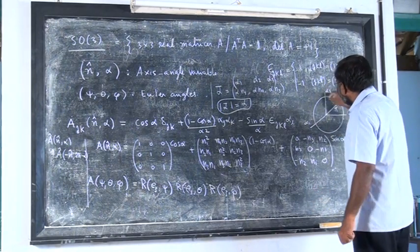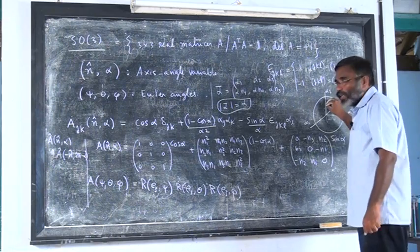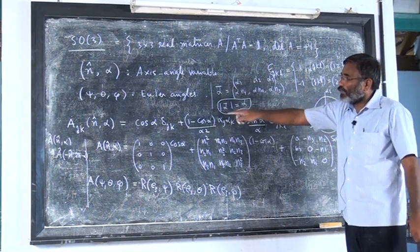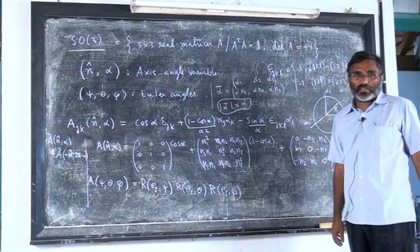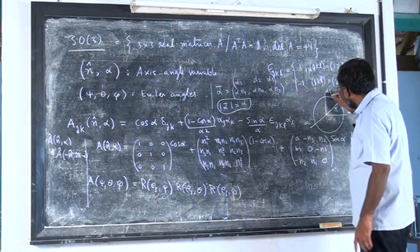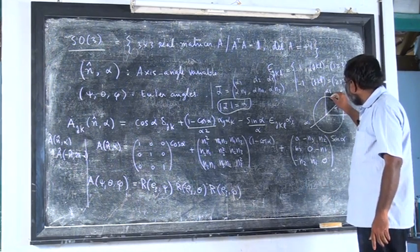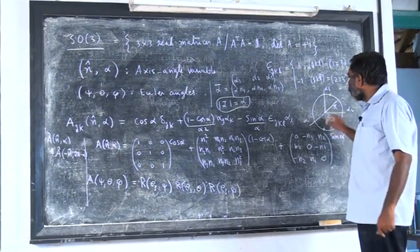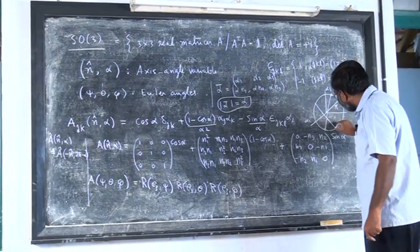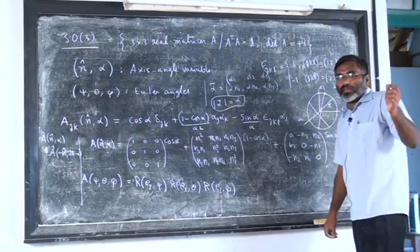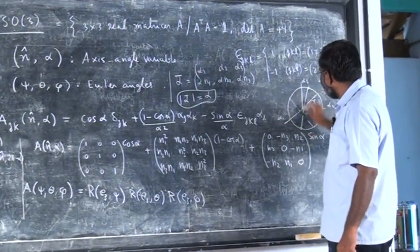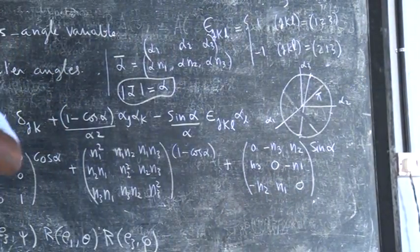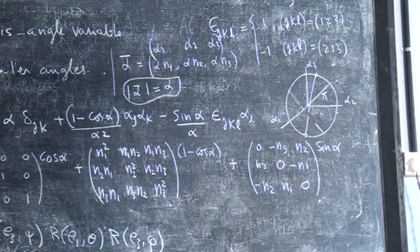Every point on the interior of this sphere is a parameter value that gives rise to a rotation matrix. But if I have a point on the surface, then the diametrically opposite point does not give a different matrix. So I must identify the diametrically opposite points. This sphere with diametrically opposite points identified is the group manifold of SO(3).